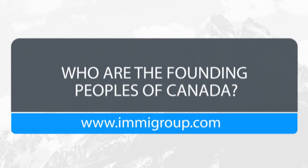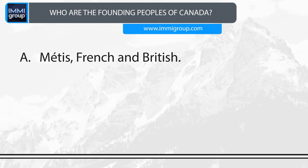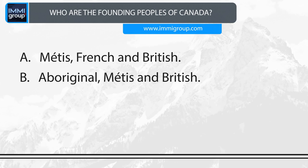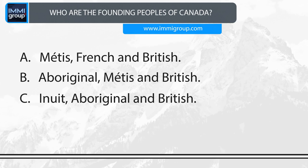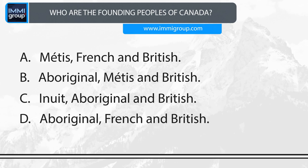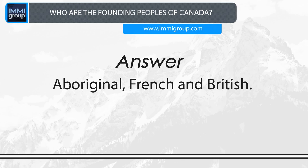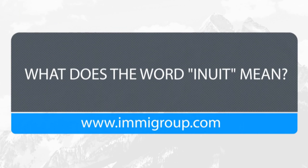Who are the founding peoples of Canada? A. Métis, French and British. B. Aboriginal, Métis and British. C. Inuit, Aboriginal and British. D. Aboriginal, French and British. Answer: Aboriginal, French and British.